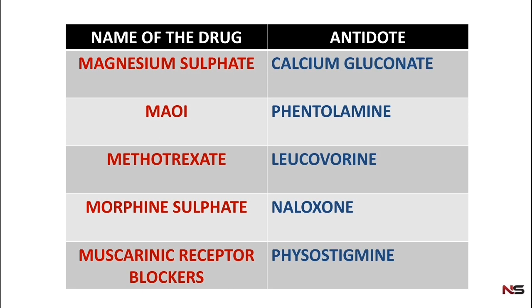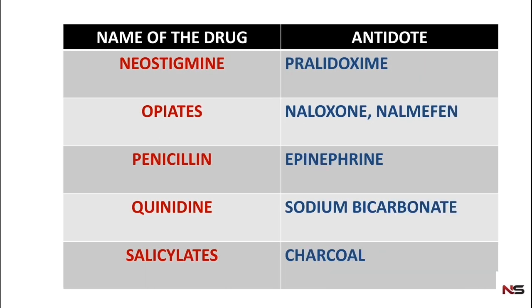For muscarinic receptor blockers, physostigmine is used as the antidote. For neostigmine poisoning, pralidoxime is the antidote. For opiates, naloxone and nalmefene are used.